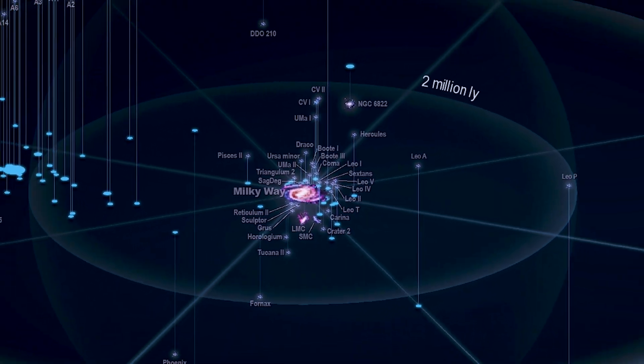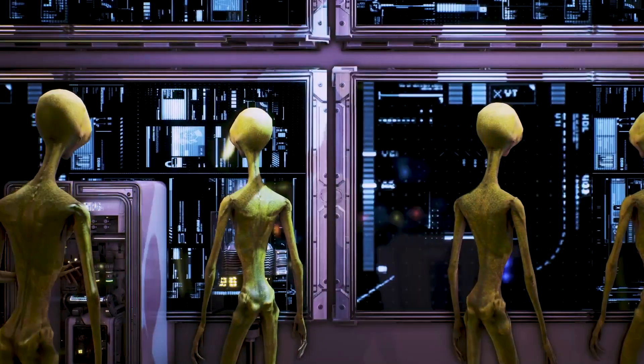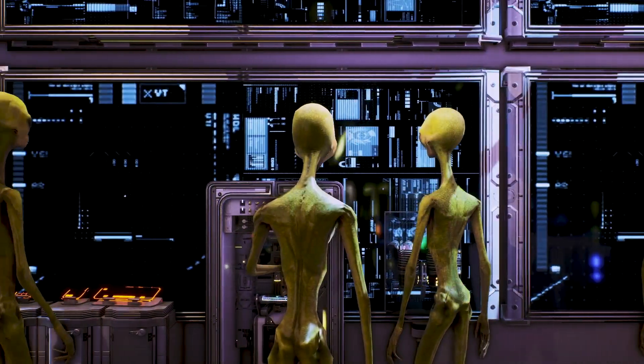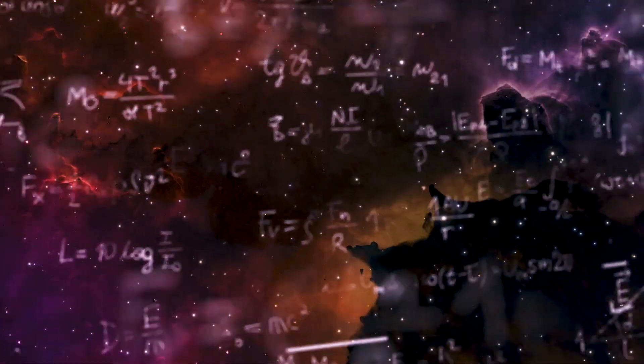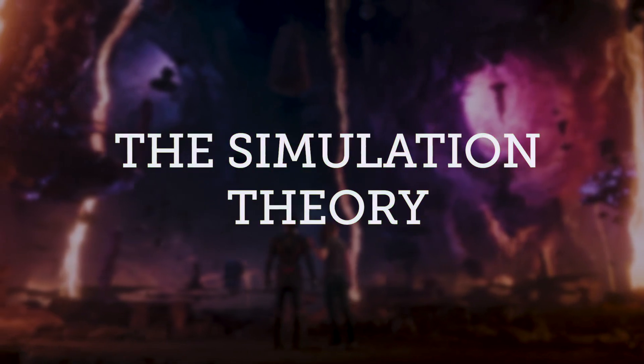This gives rise to some bizarre notions, such as the zoo hypothesis, which holds that extraterrestrial species may be deliberately avoiding us and secretly watching us. Or yet another that brings us to our next theory, the simulation theory.